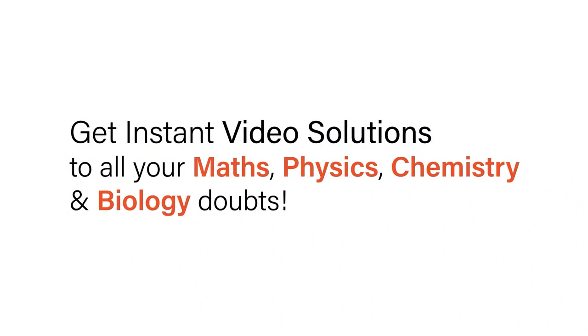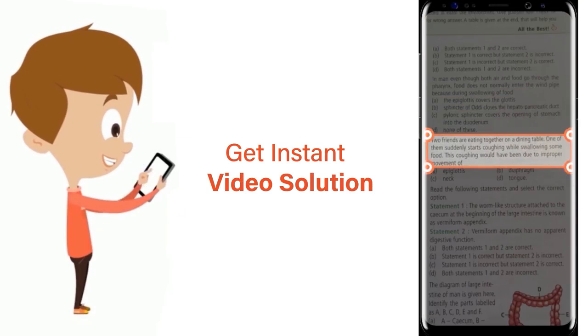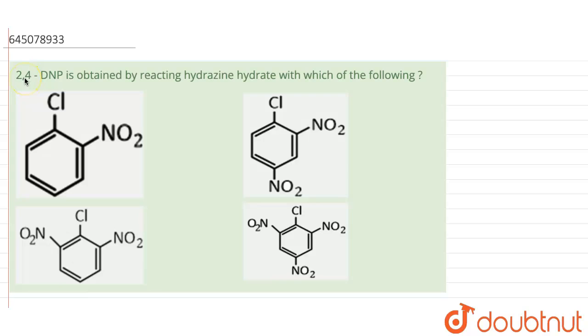With Doubtnet, get instant video solutions to all your maths, physics, chemistry and biology doubts. Just click the image of the question, crop the question and get instant video solution. Download Doubtnet app today. Hello everyone, so in this question it is given that 2,4-DNP is obtained by reacting hydrazine hydrate with which of the following.